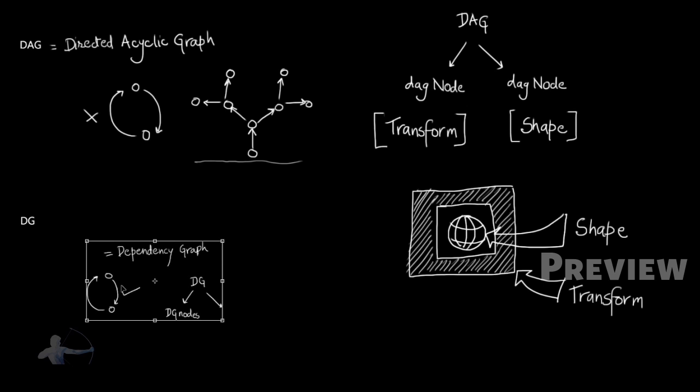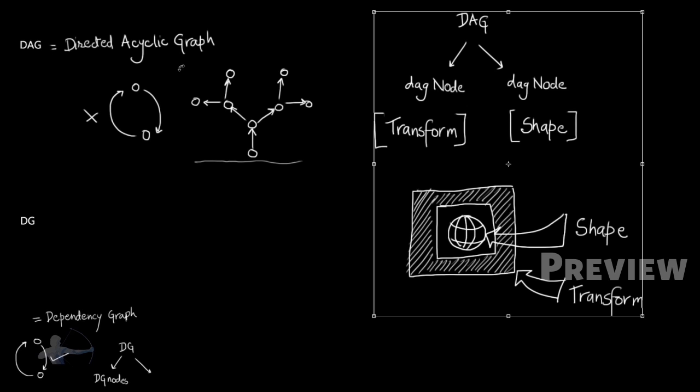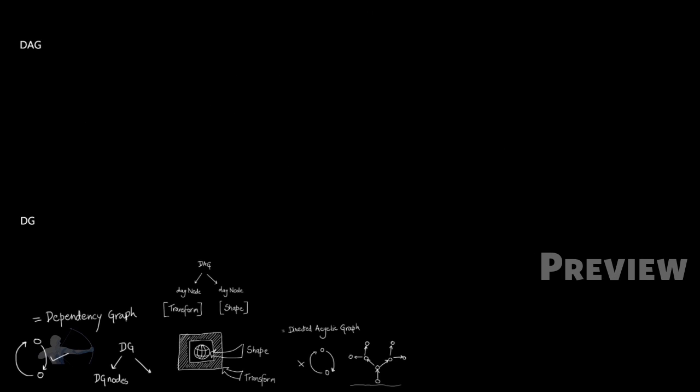Now we would understand one more term, which is DAG path. But before that I would make some space in the board. DAG path is a path from the root up to that particular object.